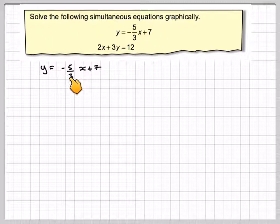So, y is equal to minus 5 over 3x plus 7 is best drawn using y is equal to mx plus c. c is the y-intercept, and therefore c is equal to 7.